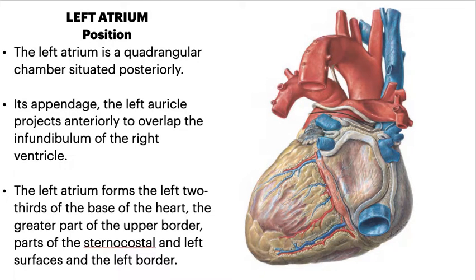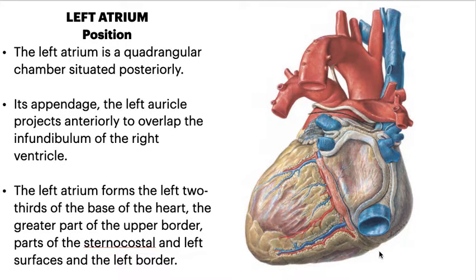The left atrium is positioned like a quadrangular chamber posteriorly. Its appendage, the left auricle, projects anteriorly to overlap the infundibulum of the right ventricle. The left atrium forms about two-thirds of the base of the heart, the greater part of the upper border, and parts of the sternocostal surface, the left surface, and the left border.